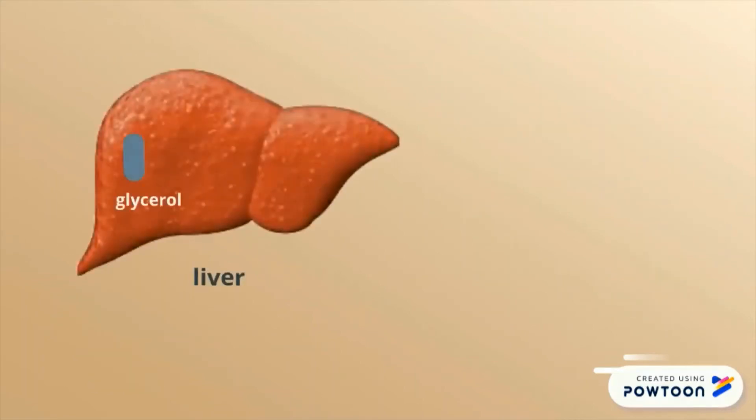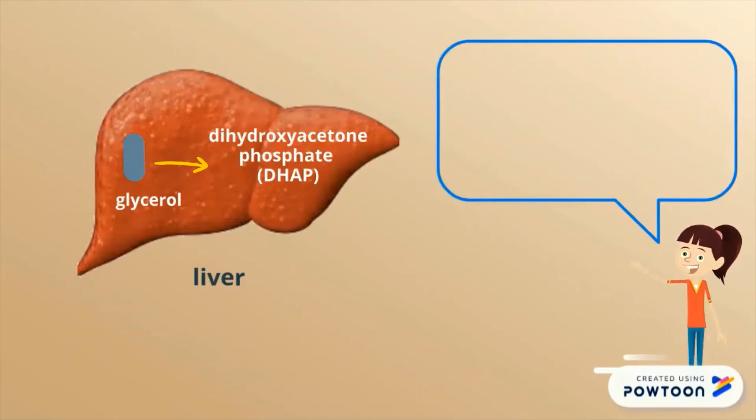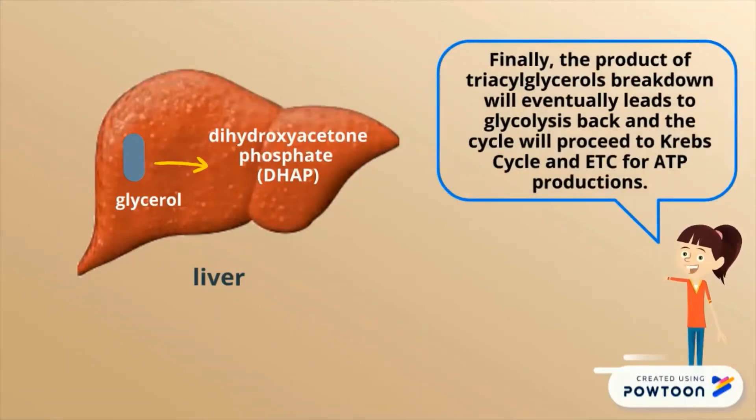In the liver, enzymes will convert glycerol to dihydroxyacetone phosphate which is the intermediate molecule of glycolysis. Finally, the product of triacylglycerol's breakdown will eventually lead to glycolysis and the cycle will proceed to Krebs cycle and electron transport chain for ATP production.